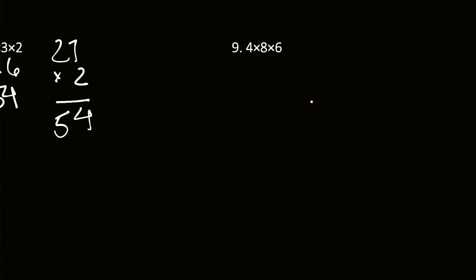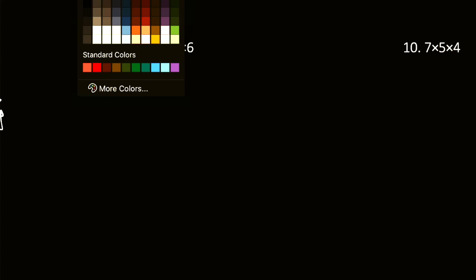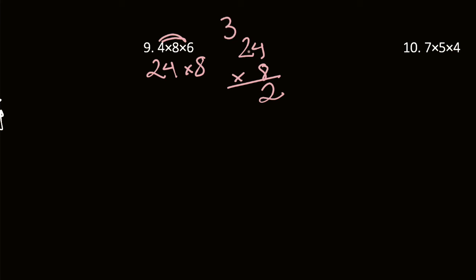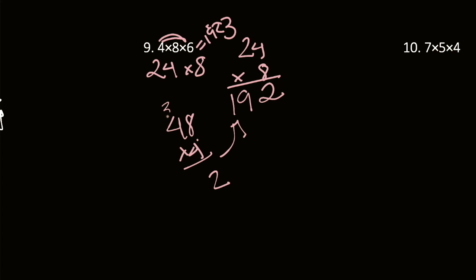Now let's do number 9: 4 times 8 times 6. I'm going to group 4 and 6, which gives us 24 times 8. 24 times 8 — 4 times 8 is 32, write the 2, carry the 3. 2 times 8 is 16, plus 3 is 19. So we get 192. We can also group 8 and 6, getting 48 times 4, which is also 192. Let's check: 8 times 4 is 32, carry 3, then 16 plus 3 is 19 — so 192. Same answer again.